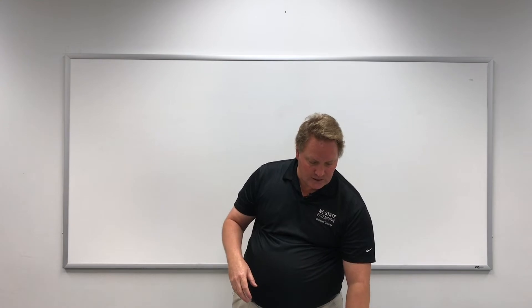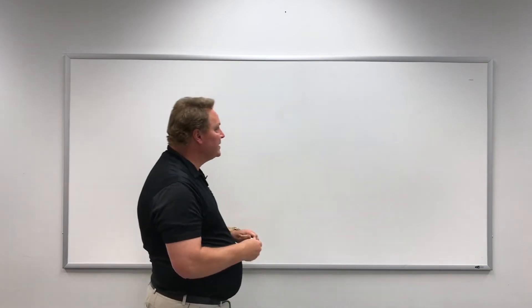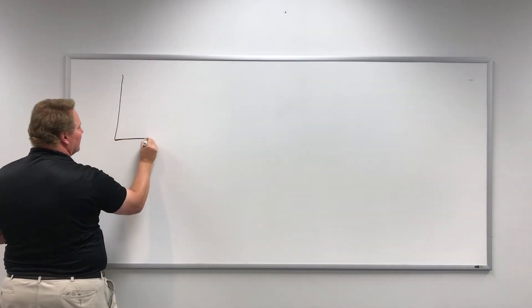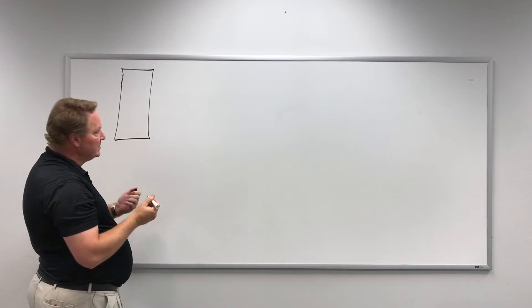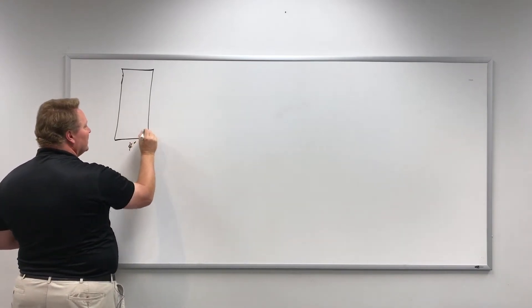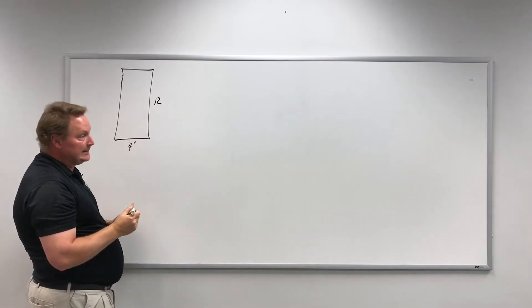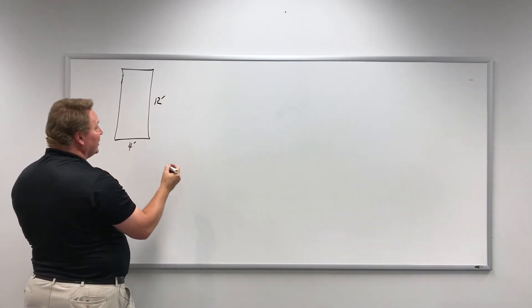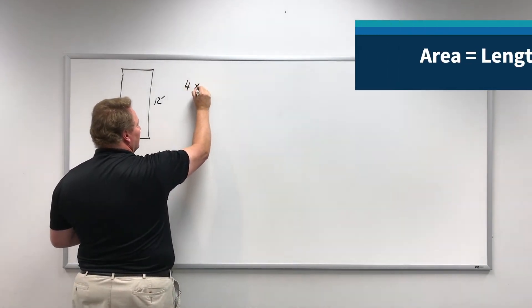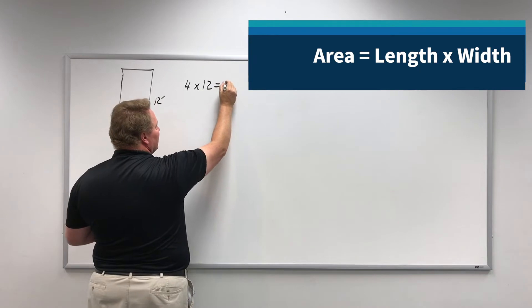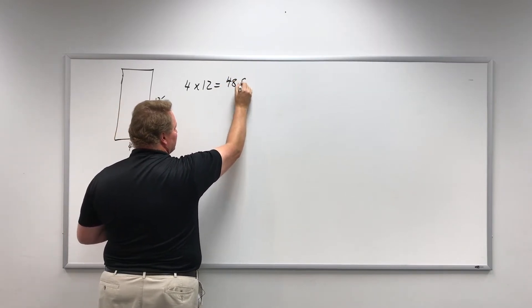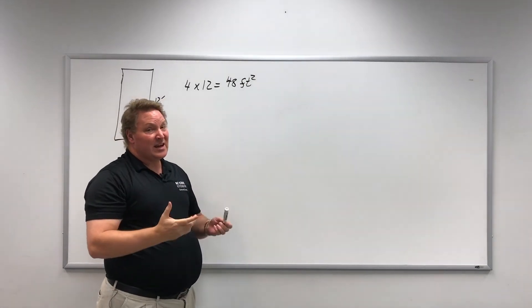Now comes the fun and exciting part - we get to do some math. The soil test recommendation says five pounds of 21-0-0 per 1,000 square feet. If you remember when we looked at the vegetable garden, it was shaped like this: it's a raised bed, four feet wide and 12 feet long. In order to figure out the area, we take four feet and multiply that by 12 feet, and we get 48 square feet. That's a whole lot less than 1,000 square feet.